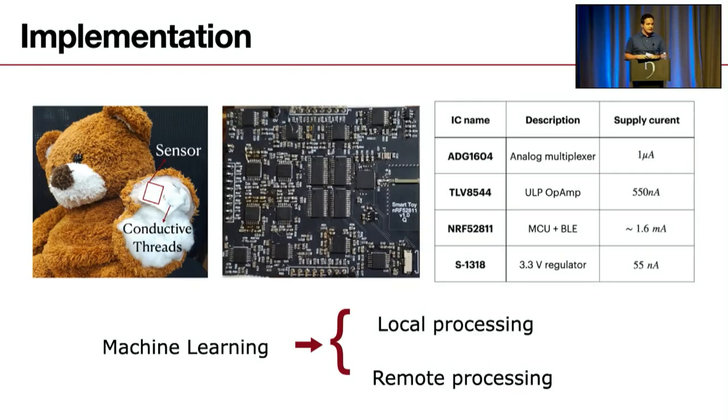Which brings me to the implementations in Fabtoy. As you can see on the figure on the left, we have the sensors placed underneath the felts of the toy. We have conductive threads to route all of these sensors to the PCB shown in the middle. The PCB's major components are listed in the table: analog multiplexers, op-amps, and regulators are all chosen to be ultra low power. For the microcontroller, we chose NRF52 family, which is relatively low power, has a reasonable amount of computational resources, and has BLE stack implemented inside.